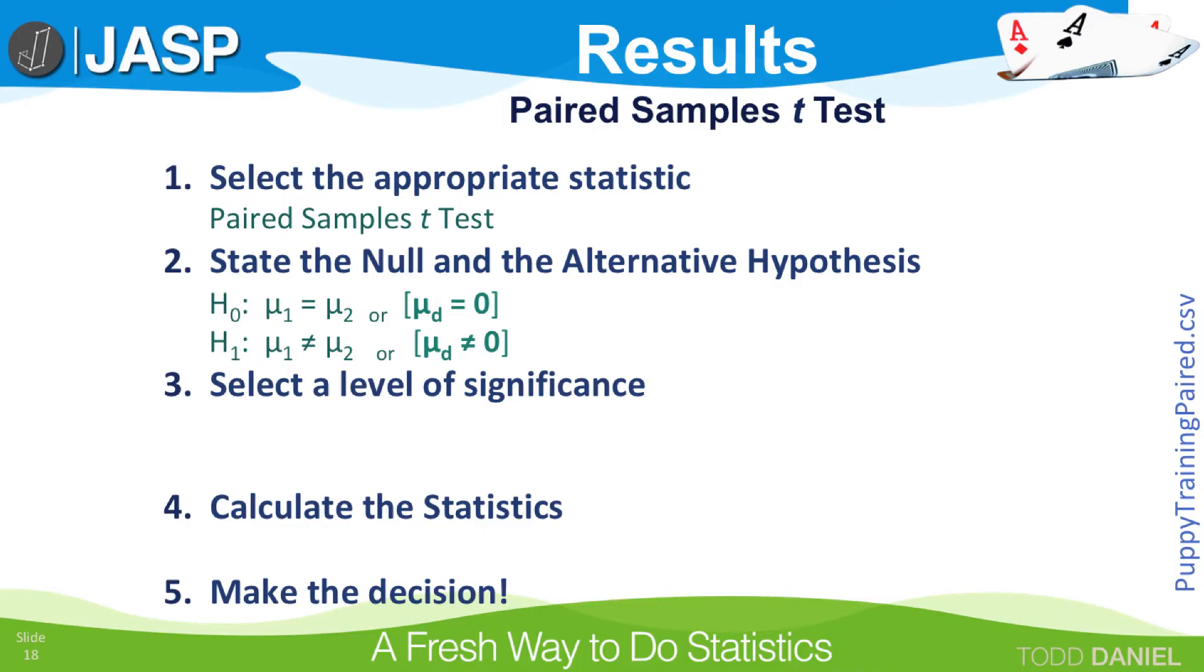Step three, select a level of significance. We have already established that this is a two-tailed test. Our alpha level is going to be 0.05. The degrees of freedom for the paired samples t-test is n minus 1, where n equals number of pairs of samples. We have 8 pairs of puppies divided into the two groups, so n minus 1 equals 7.